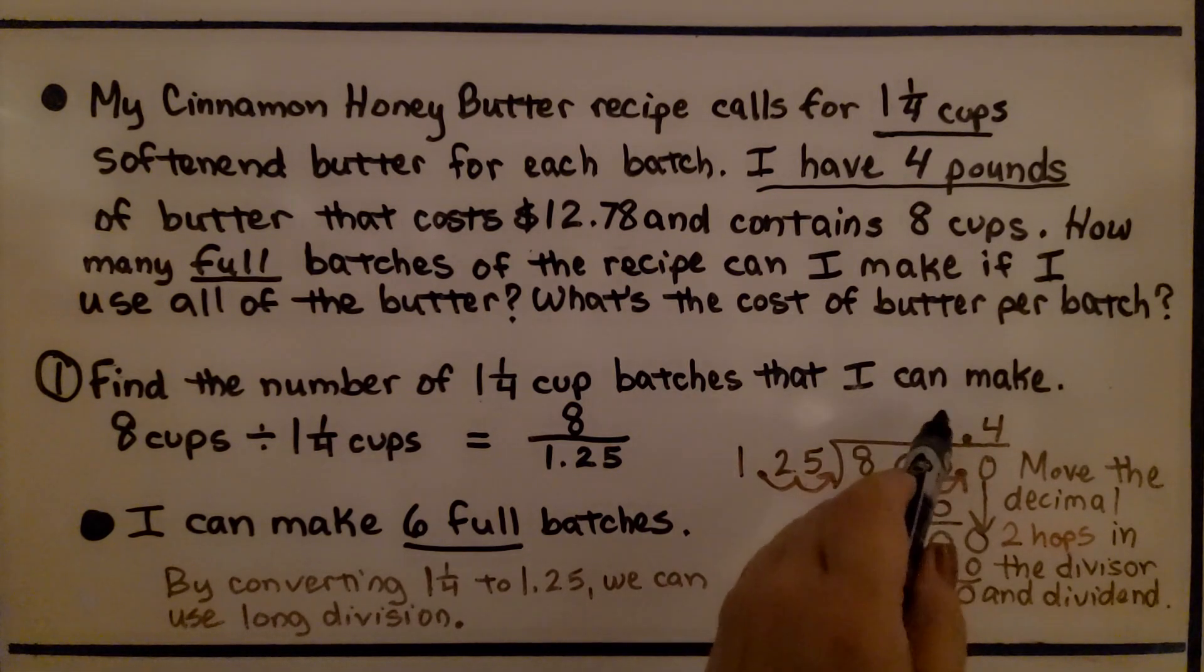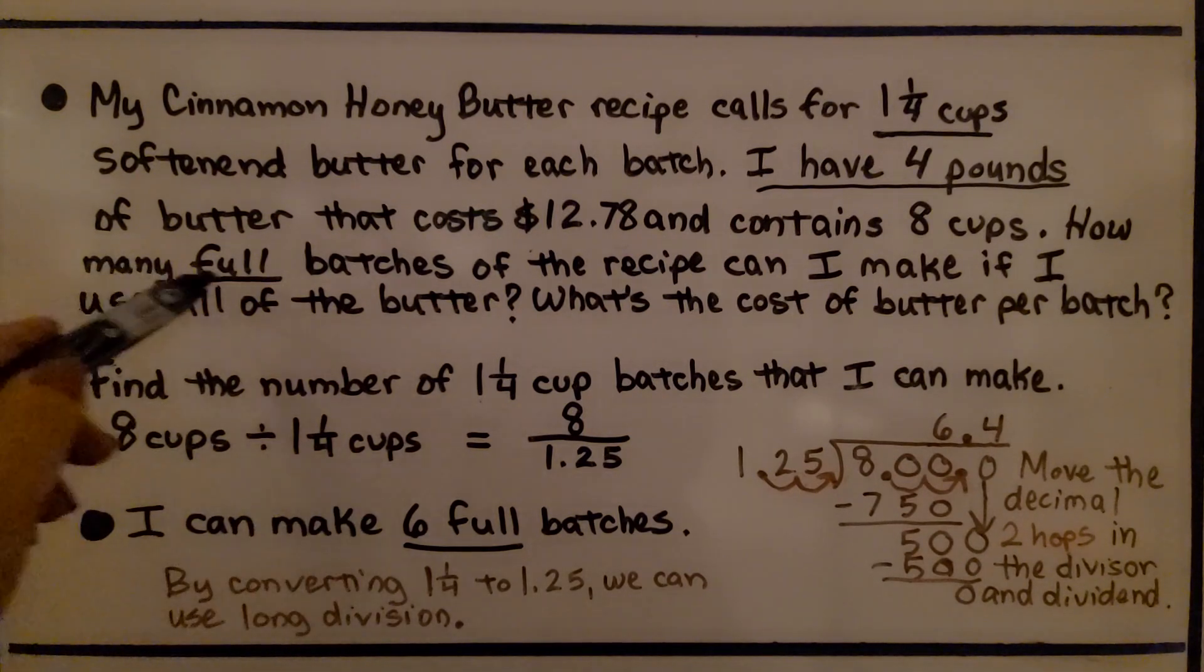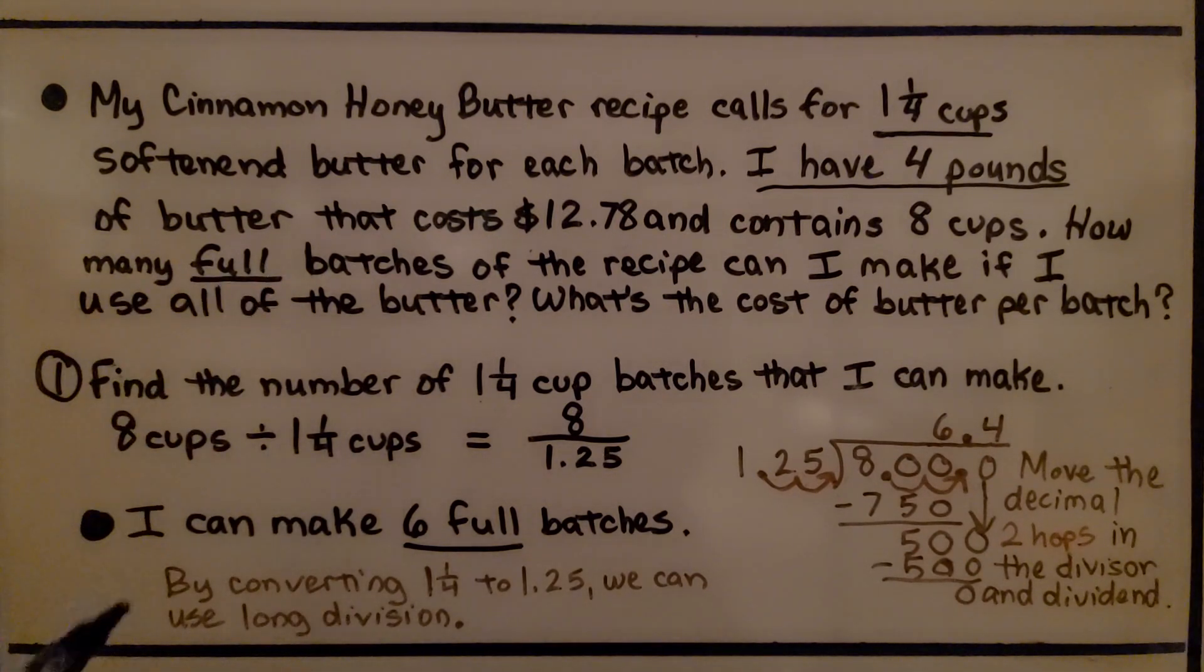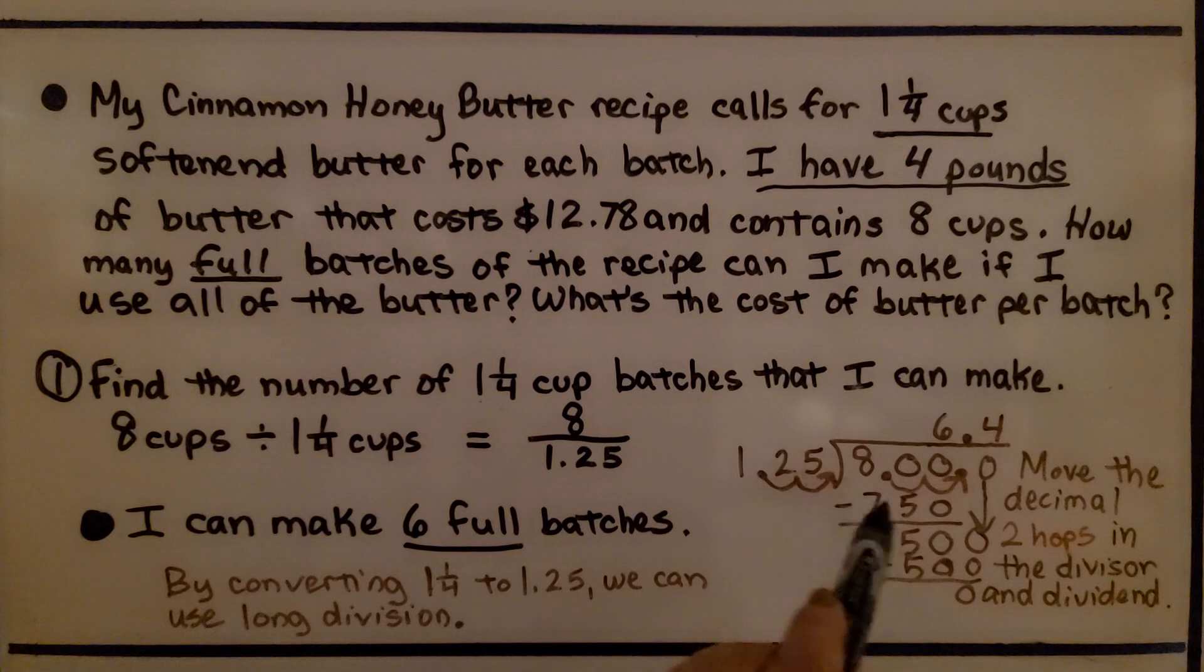which means this decimal point will need to be hopped over 2 points to the right, and it'll go directly above. We do our long division and get 6.4. Now it's asking how many full batches can we make, so I can make 6 full batches because the 4 tenths won't count.